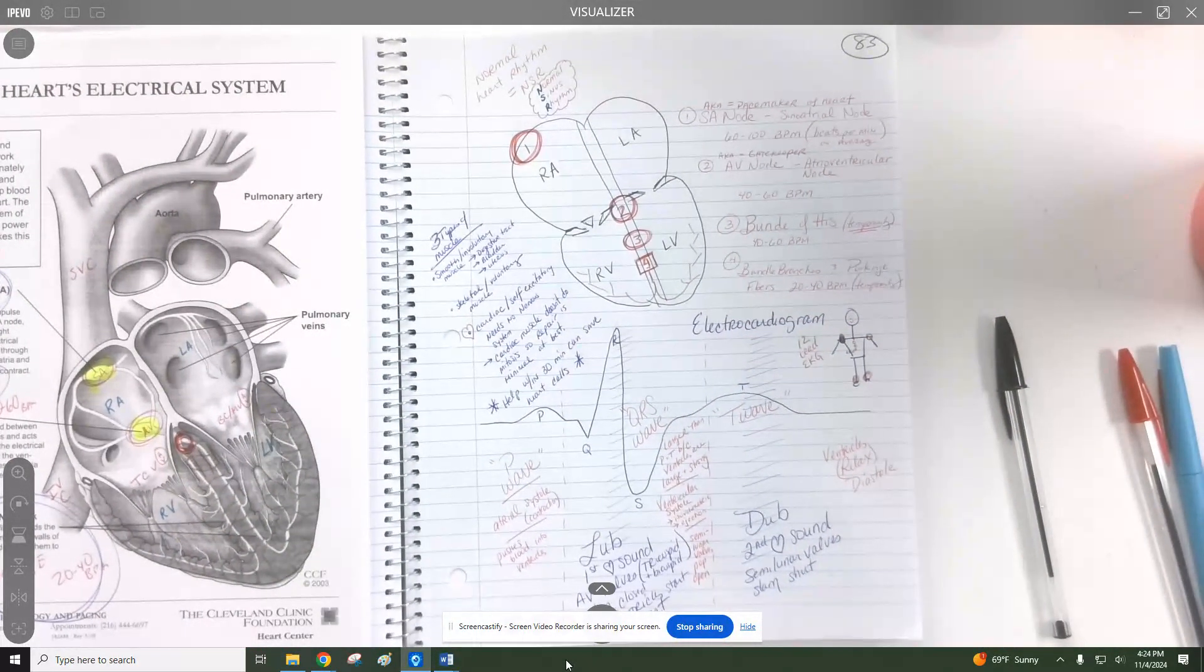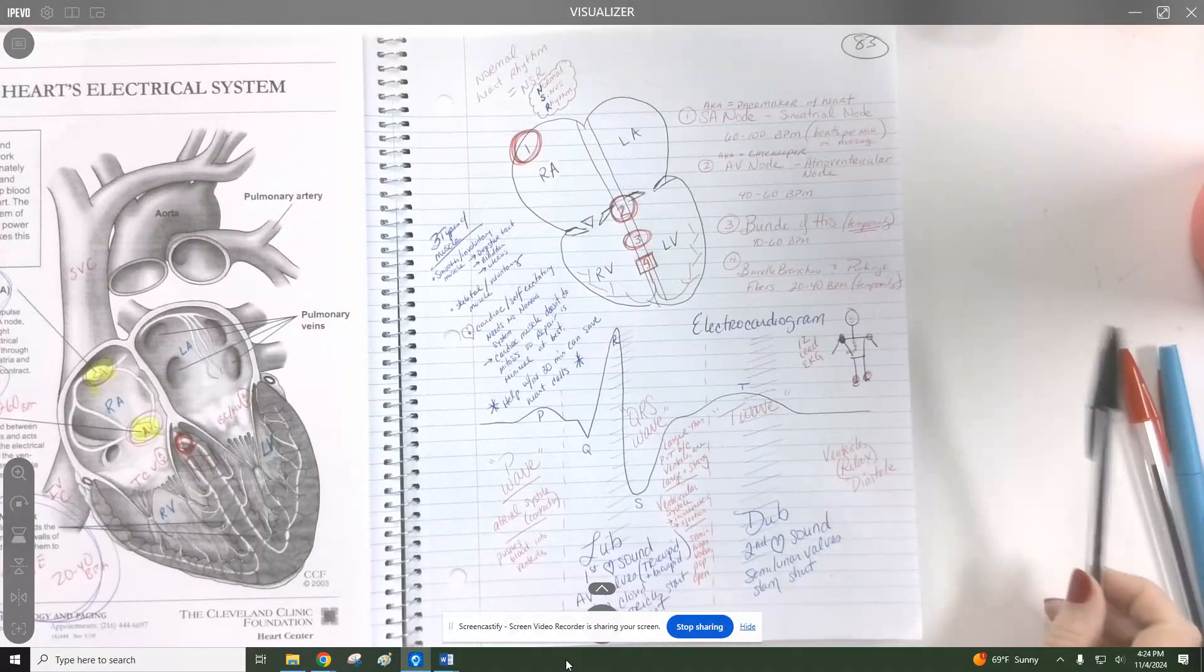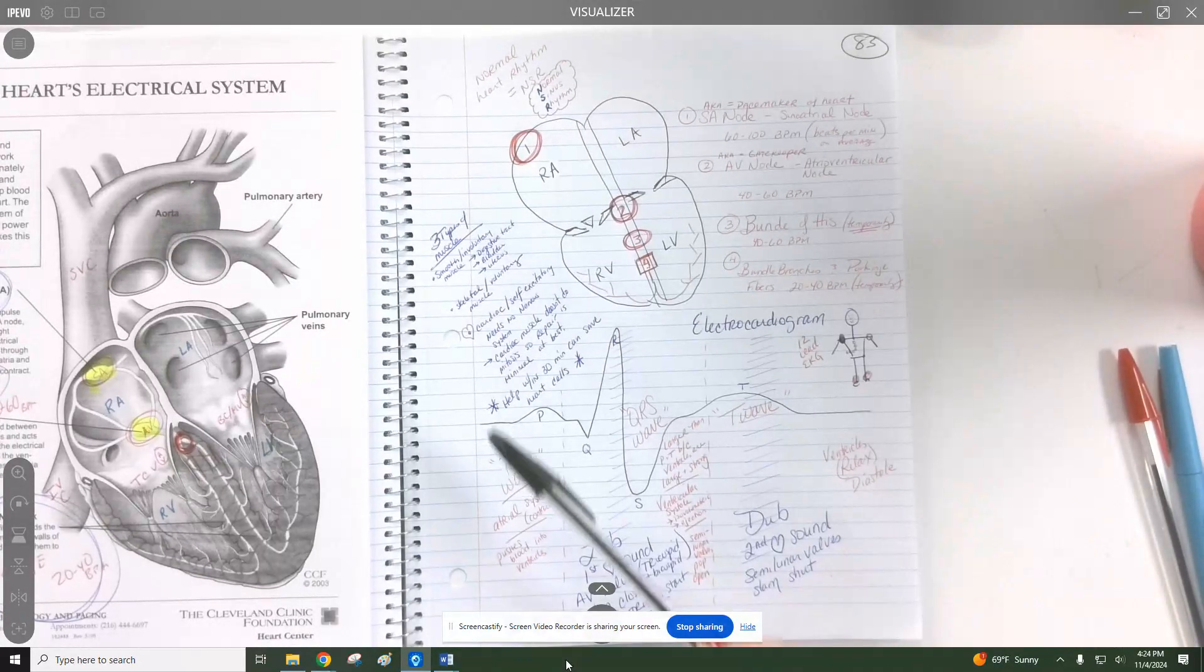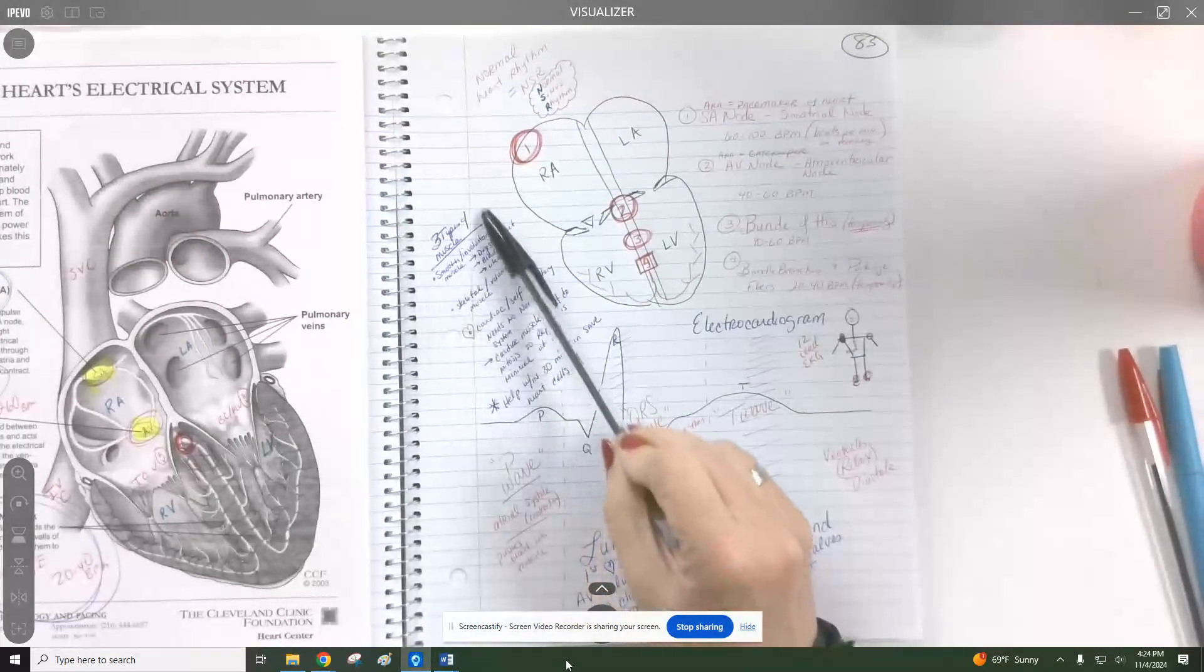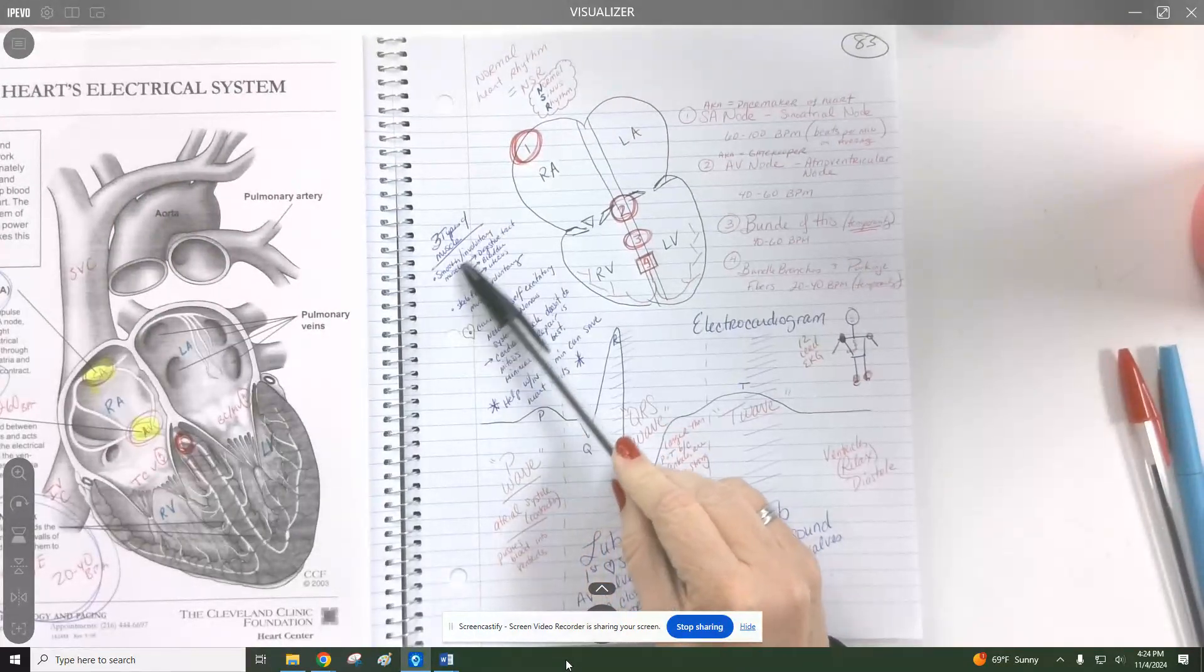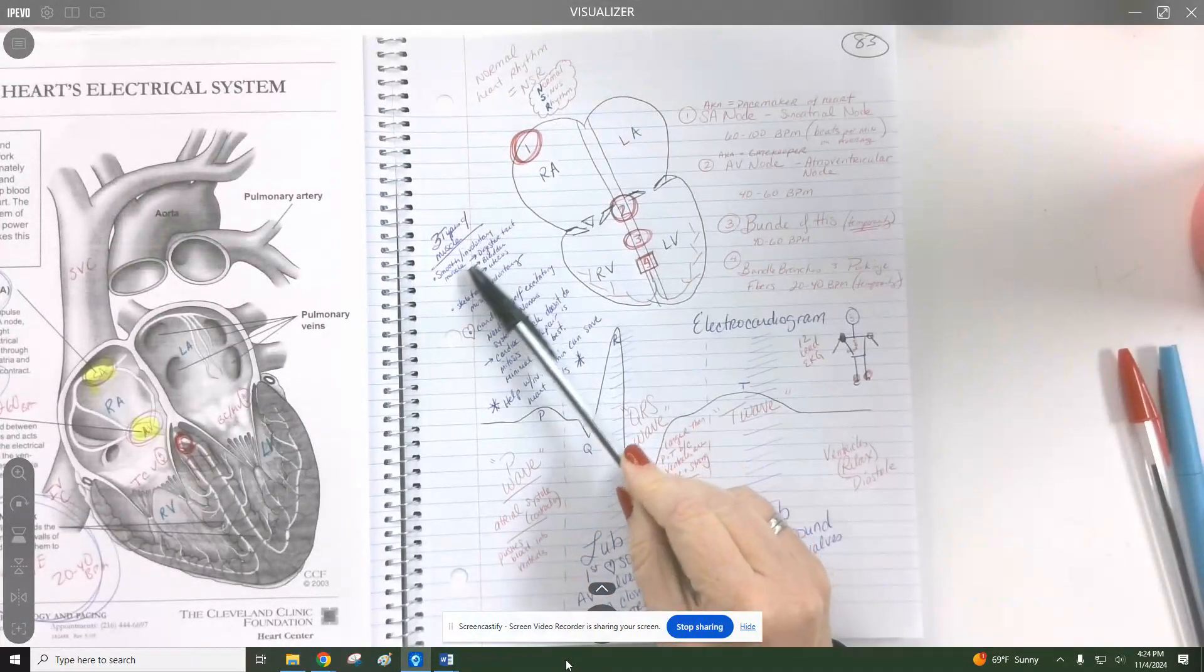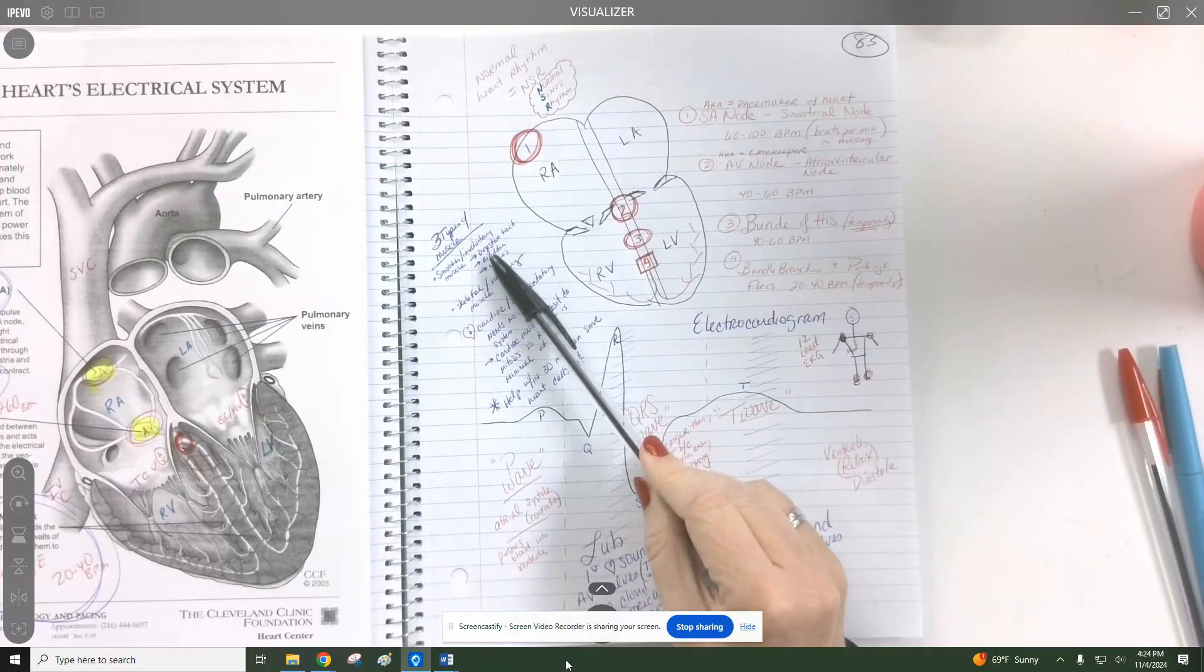So take a little bit of time perusing some of these images. I've got just a little bit of a reminder about the three types of muscle. Smooth muscle or involuntary muscle is going to be your digestive tract, your bladder, your uterus.